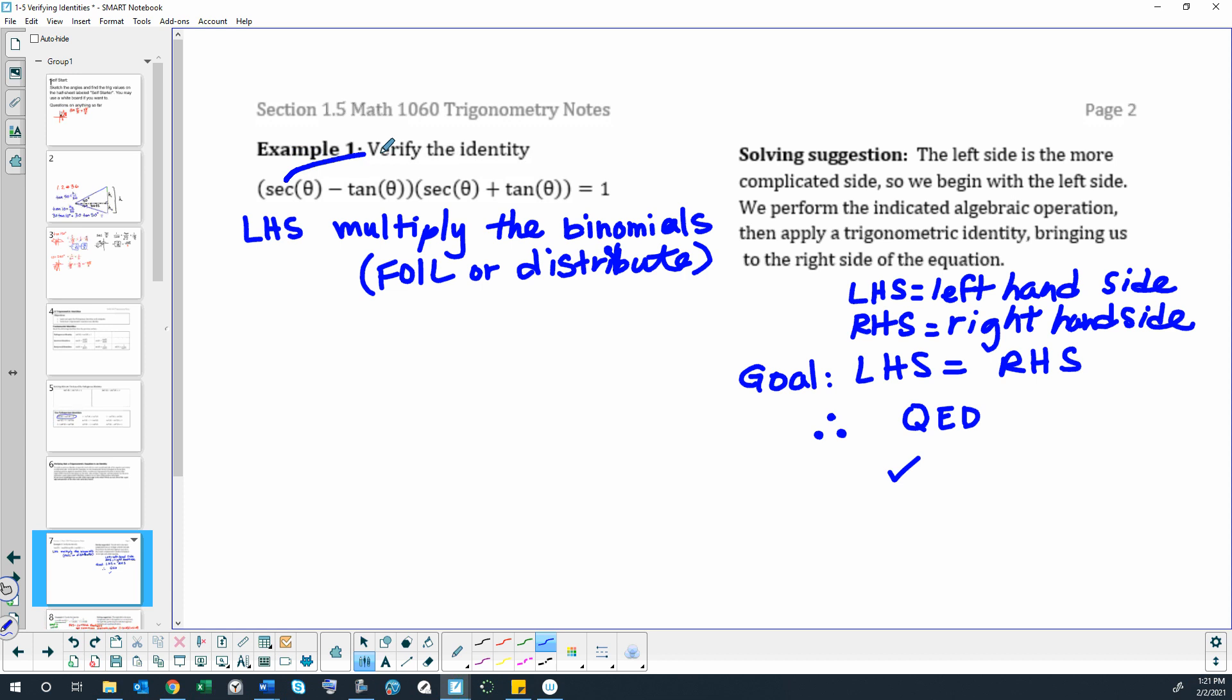Let's do this. So secant theta times secant theta is secant theta squared. We're going to write that as secant with a square there, no parentheses. And then secant times tangent, so that'll be plus secant theta tangent theta. And then for inside, we have minus tangent theta secant theta, which is the same thing as this, just in the opposite order.